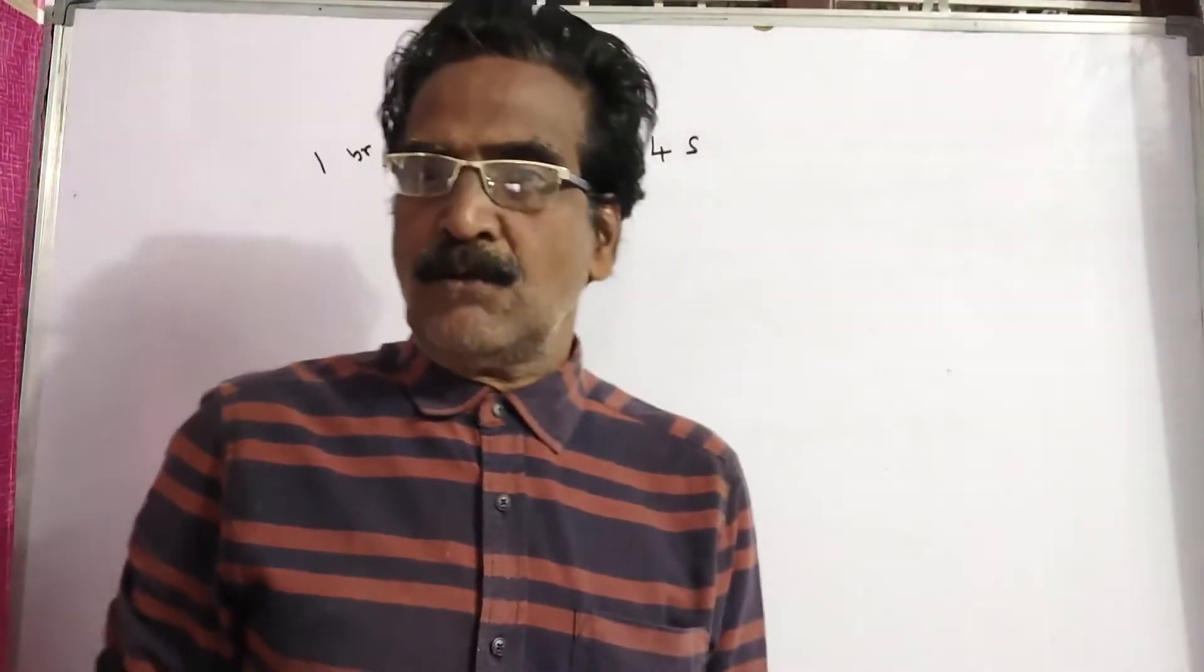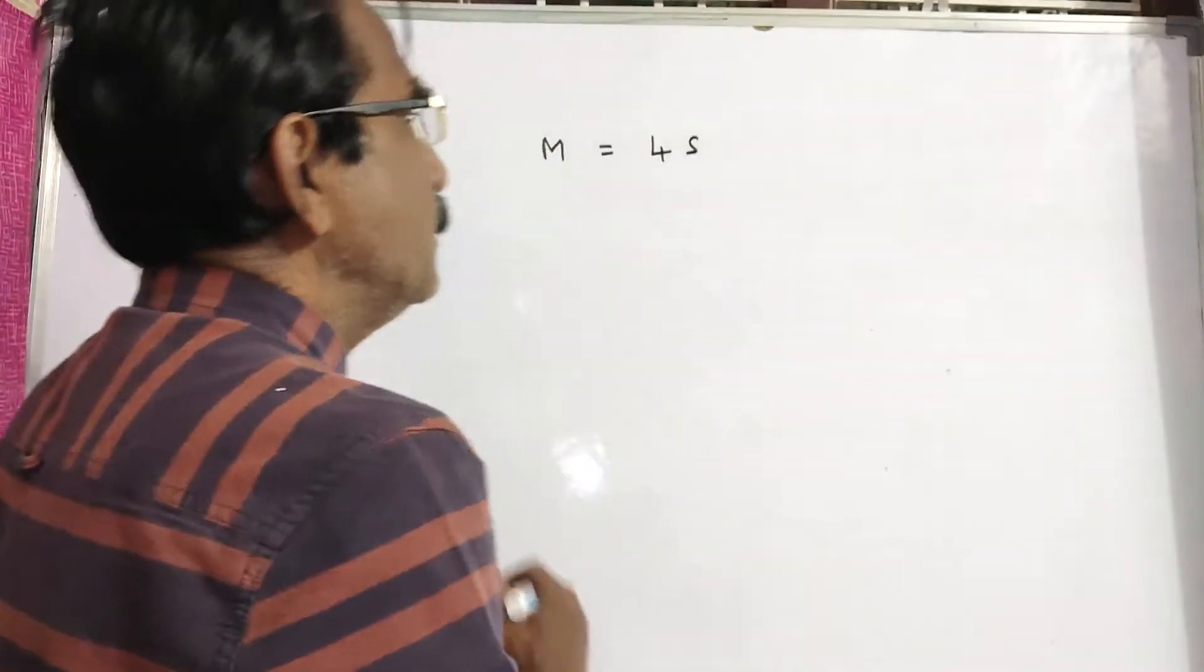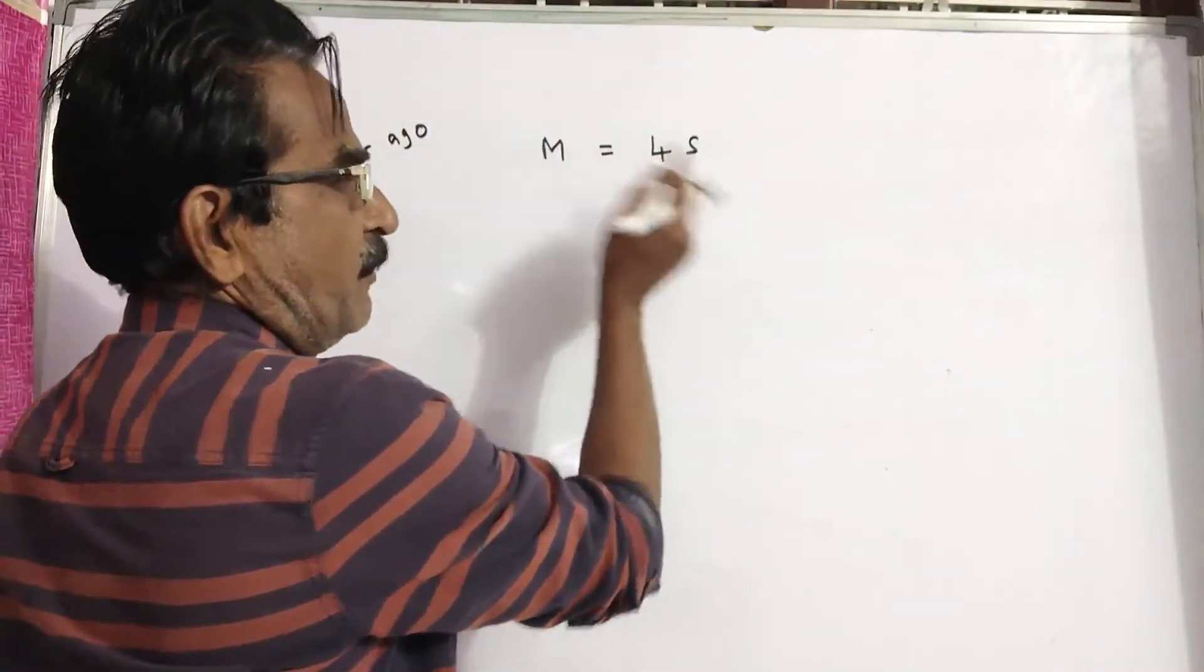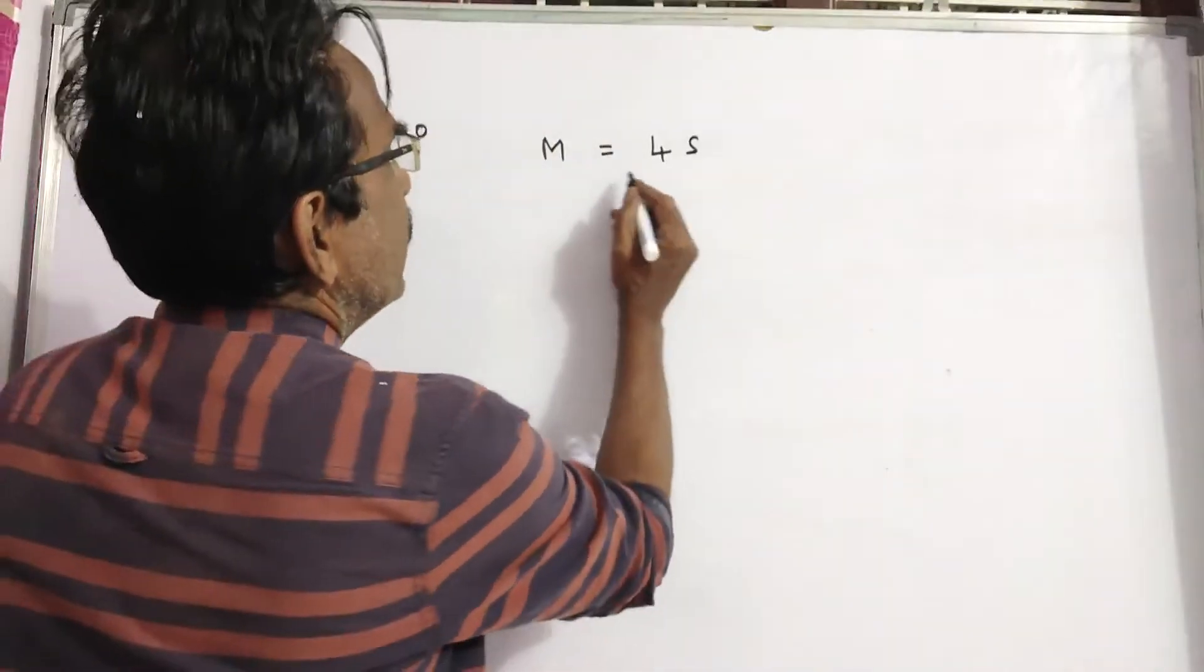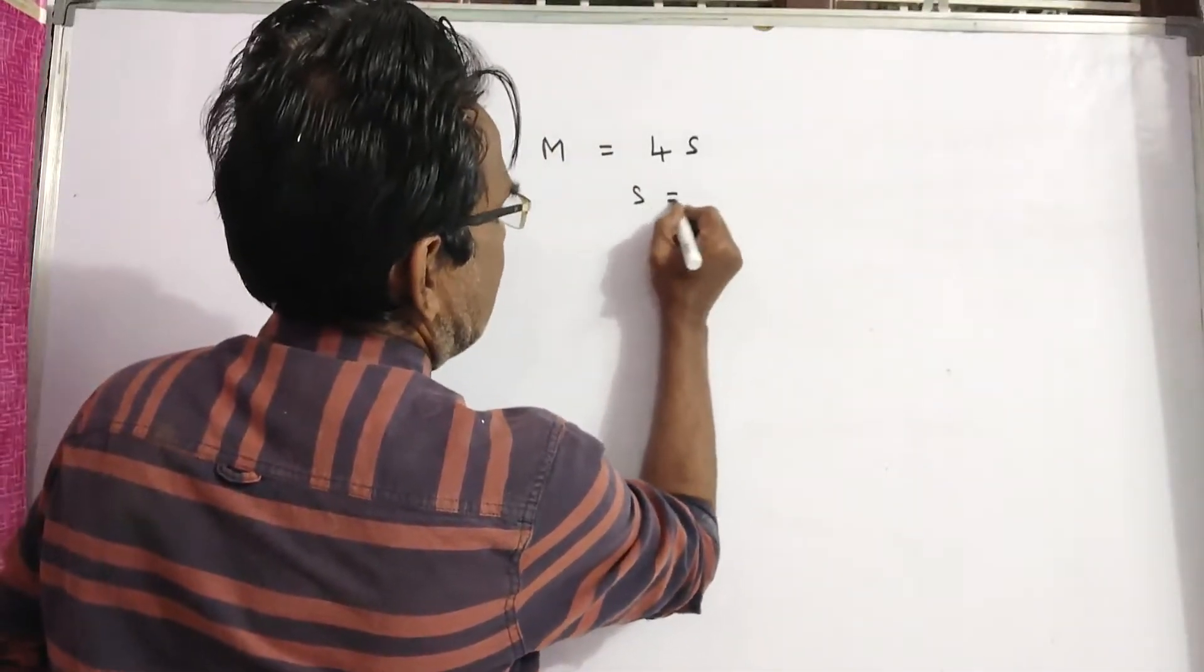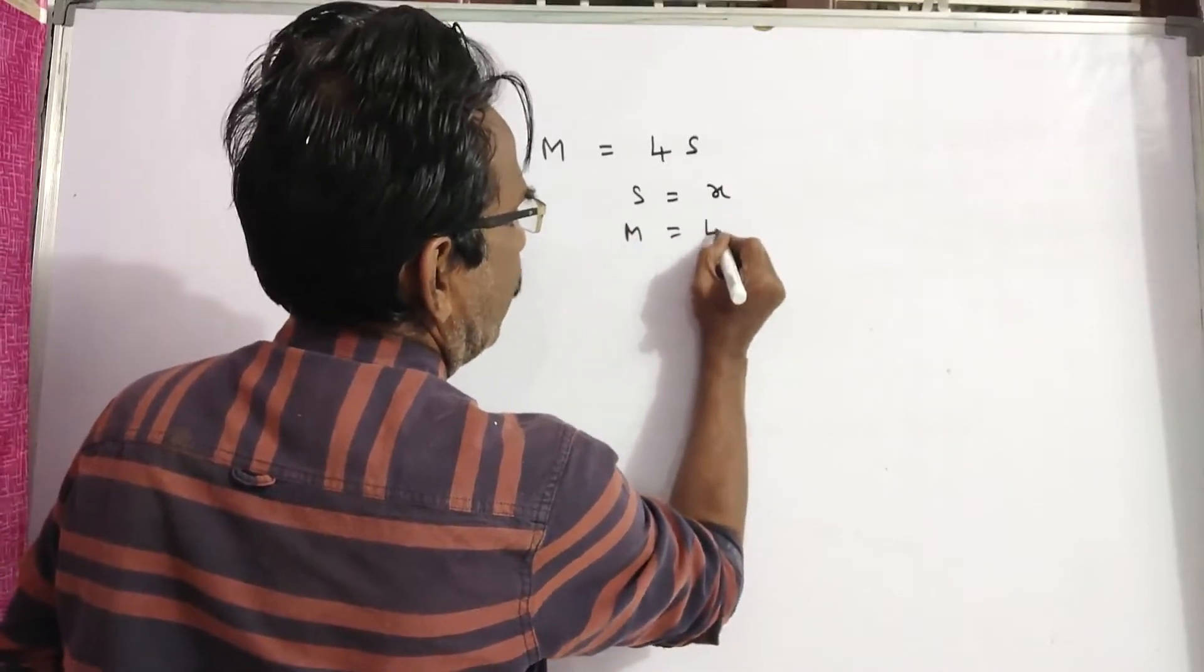So M is equal to 4S. Or the ratio is, ratio of man to son is equal to 1 is to 4. If son's age is X, then man's age will be 4X.